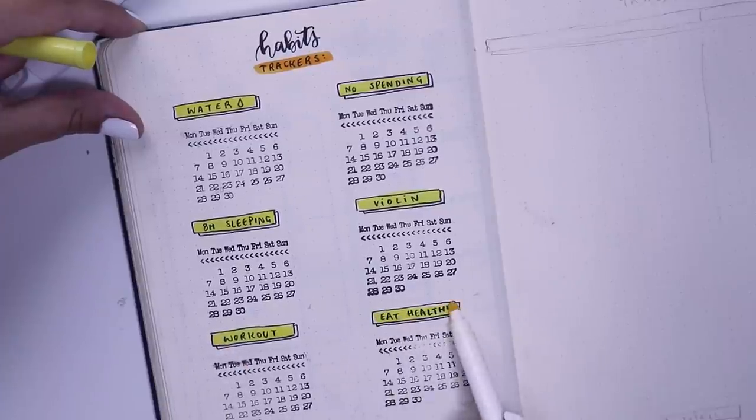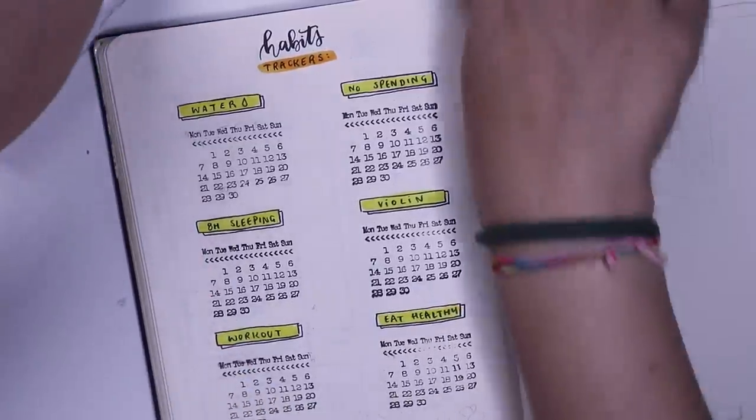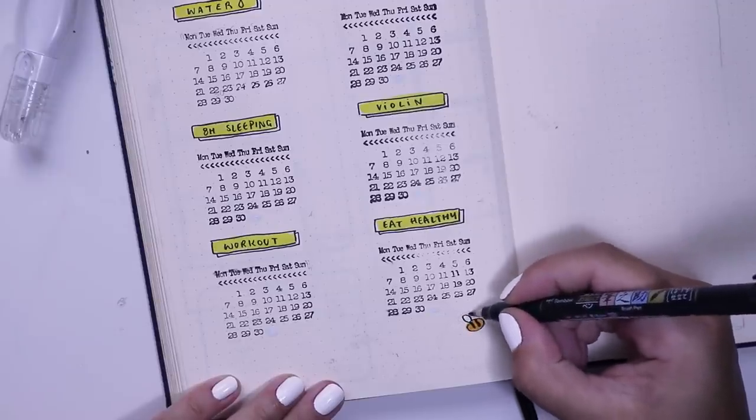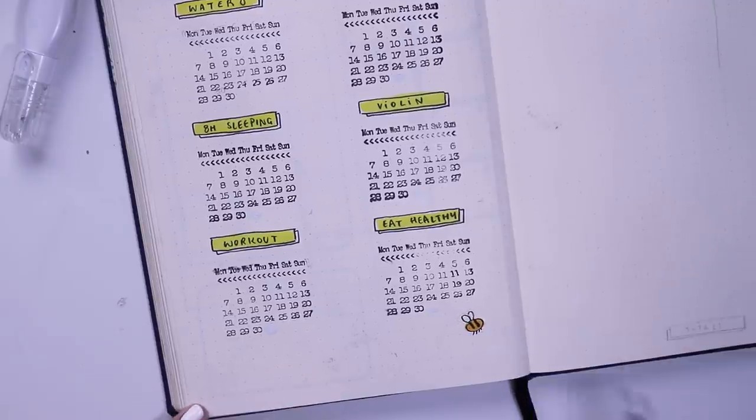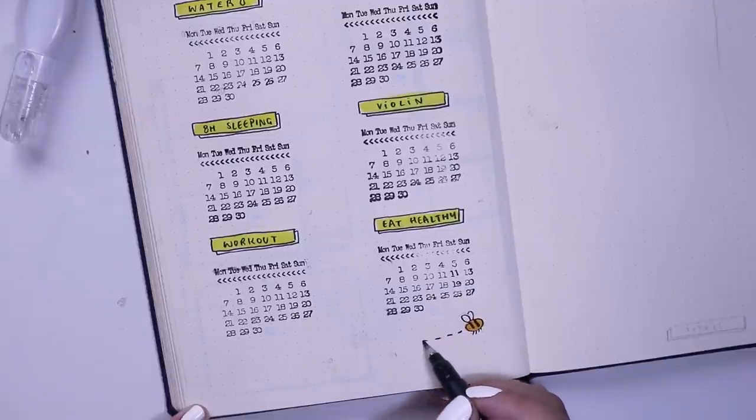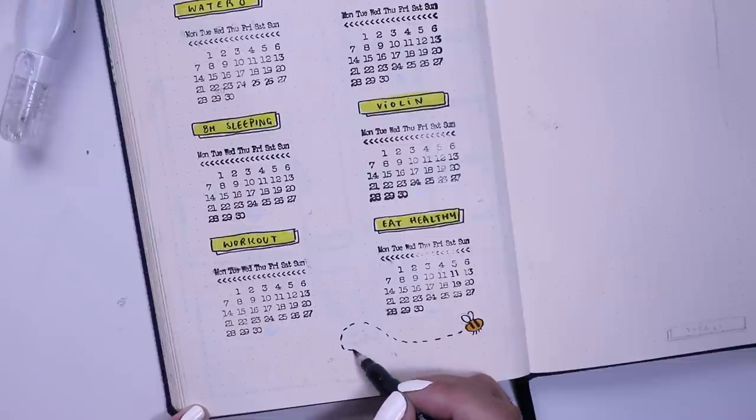That was pretty much it for my habits tracker. At the bottom, I had some empty space, so I added some little bees just kind of swooshing in onto the page. I really love adding these little track marks for my bees. It just looks adorable and doodly.